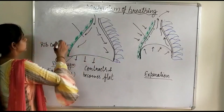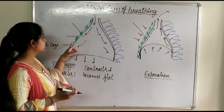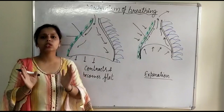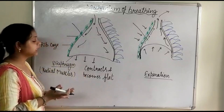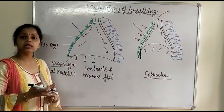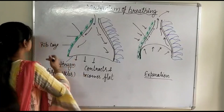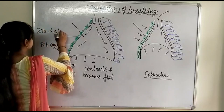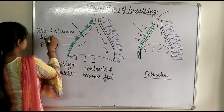On the other side, the ribs have intercostal muscles. There are two types of intercostal muscles: external intercostal and internal intercostal muscles. During inspiration, the external intercostal muscles of the ribs contract, due to which the ribs and sternum lift up.